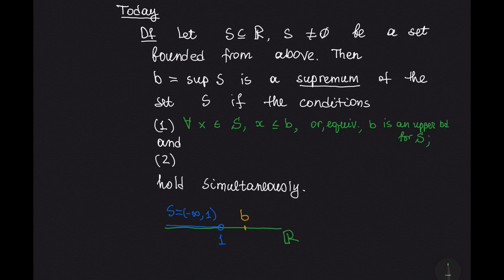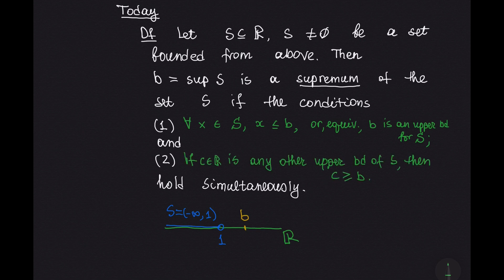The second condition is that B is the smallest upper bound of the set S. In other words, if C is any other upper bound of the set S, then C is greater than or equal to B. So if these two conditions hold simultaneously, then B is called the supremum of the set S.